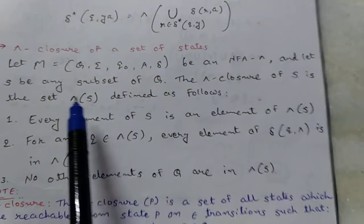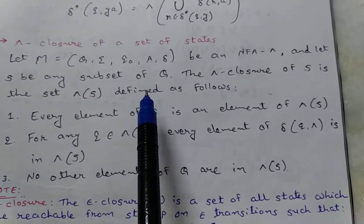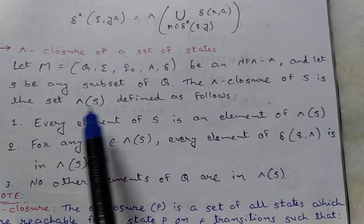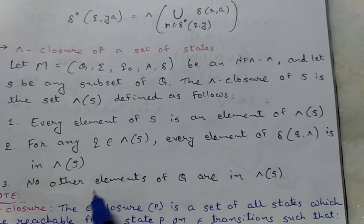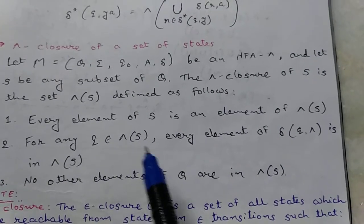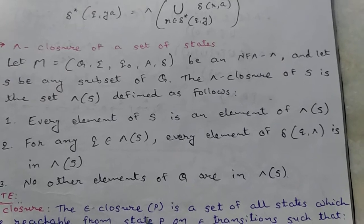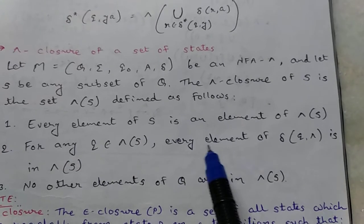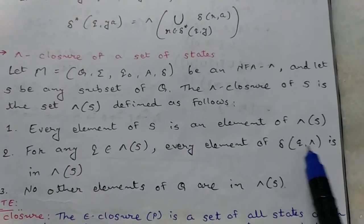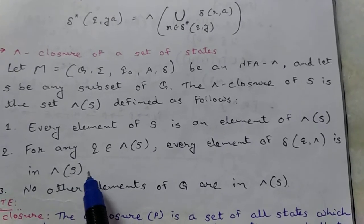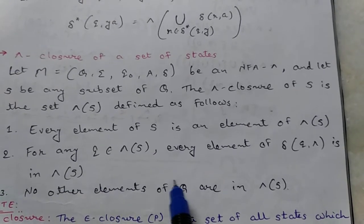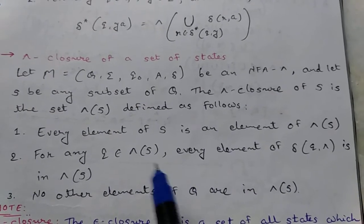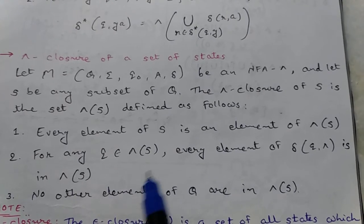The epsilon closure of S is a set epsilon of S defined as follows: First, every element of S is an element of epsilon of S. For any q belonging to epsilon of S, every element of delta of q to epsilon is also in epsilon of S. No other elements of Q are in epsilon of S.